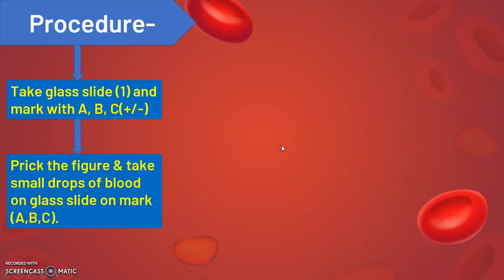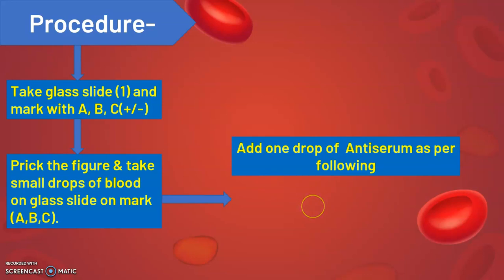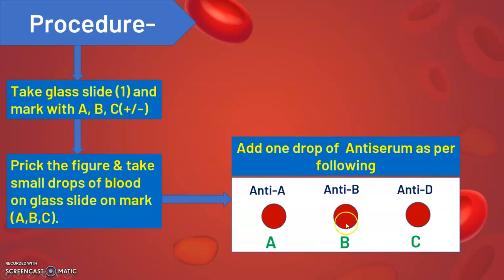Then prick your finger and take a small drop of blood on the glass slide. Next, add one drop of antiserum from the ABD kit to each marked point: at point A, add anti-serum A; at point B, add anti-serum B; and at point C, add anti-serum D to check whether it is positive or negative.